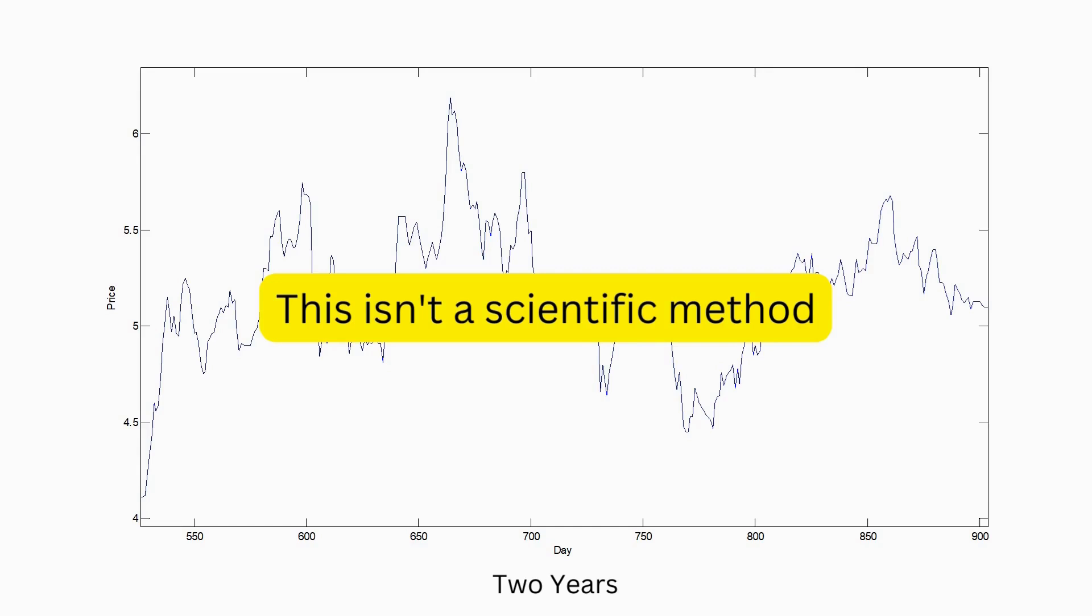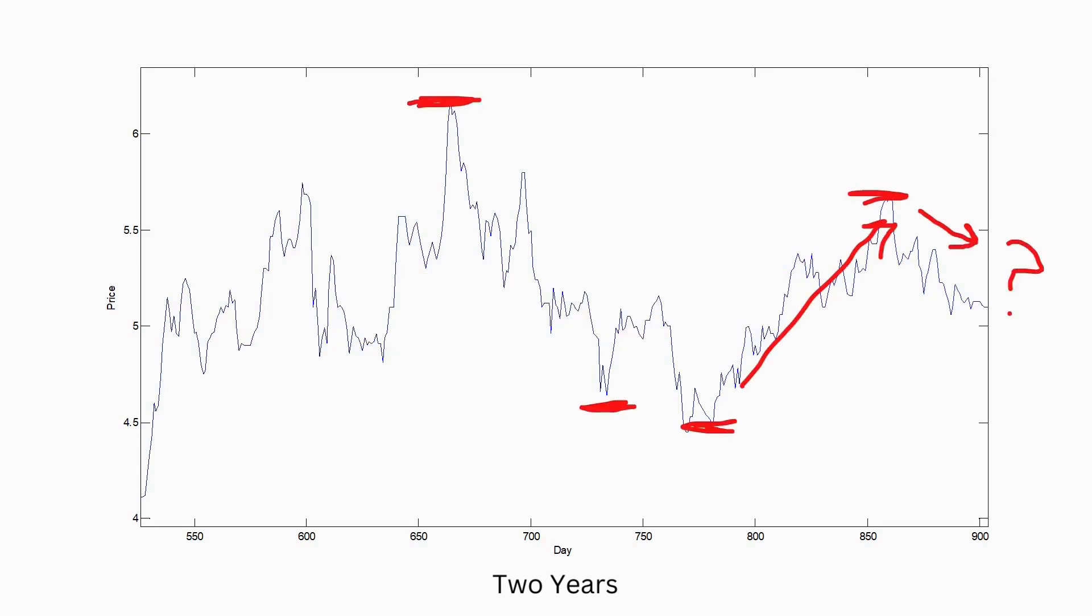A much better way of thinking about this is that it's just some line that you choose as a trader where you think there is buying support for a stock based on past behavior, or alternatively how high you think it is likely to go. Obviously the behavior of the market isn't random, so it's not unreasonable to think that looking at past price behavior might give you some idea of future behavior.